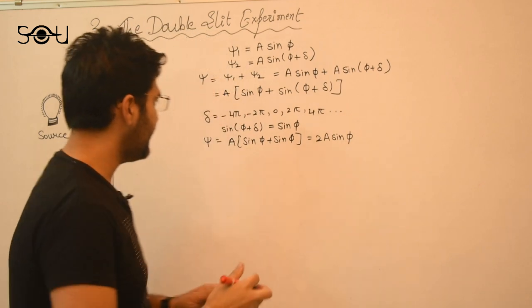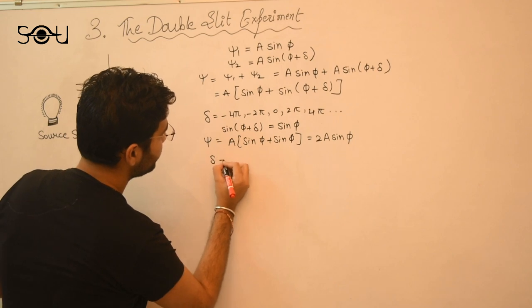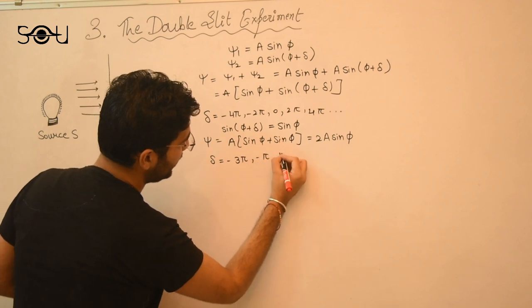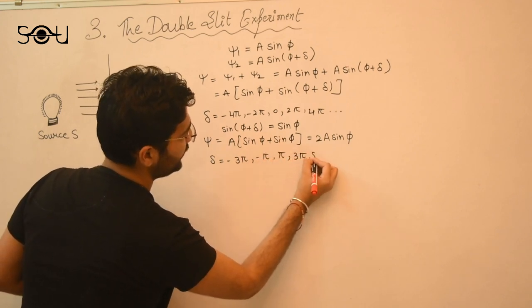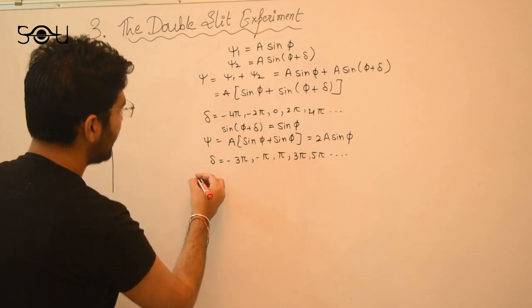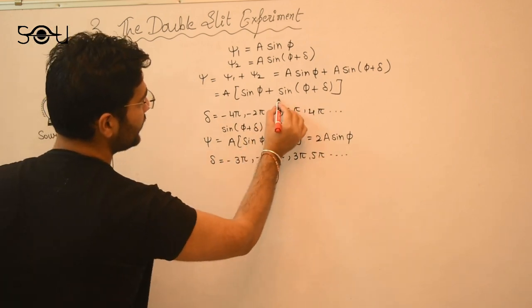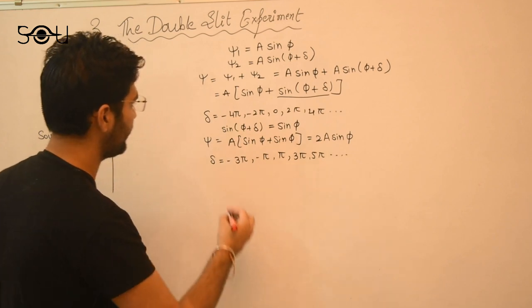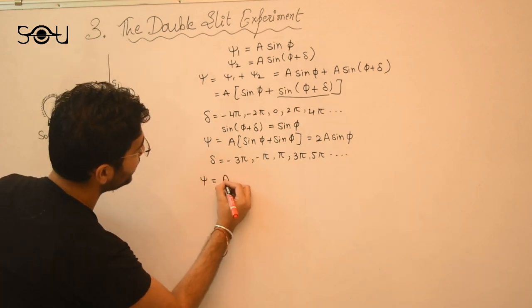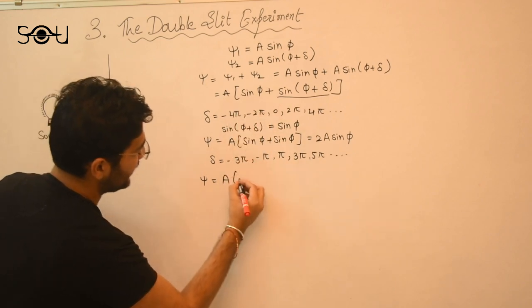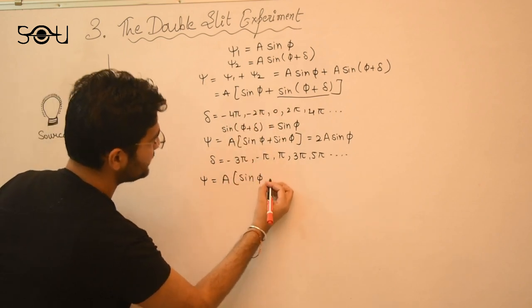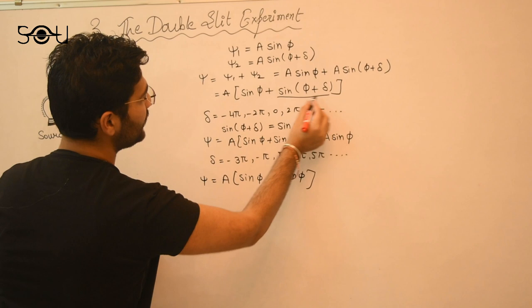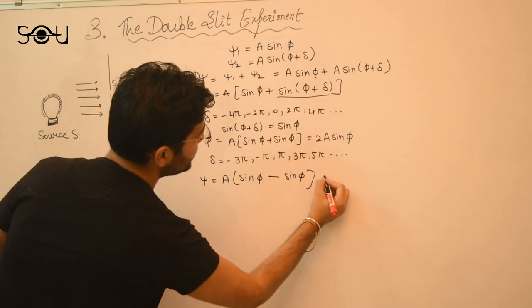And now, when we consider the second case. That is, when delta is an odd multiple of pi: minus 3 pi, minus pi, pi, 3 pi, 5 pi and so on. Xi will become—this quantity, sin of phi plus delta will become minus sin phi. This follows from the basic rules of trigonometry. So, xi will be A. This term will remain as such because there is no delta involved in this term. Sin phi minus sin phi. Because this term will become minus sin phi and hence 0.